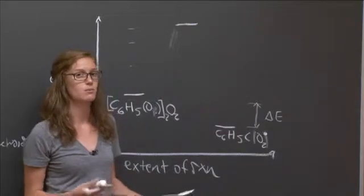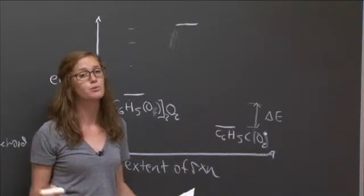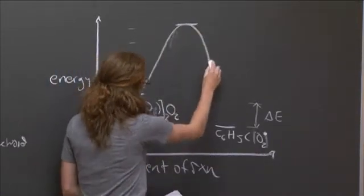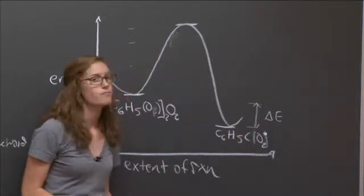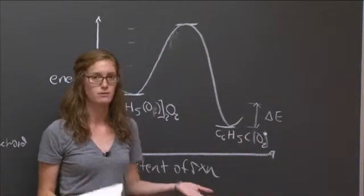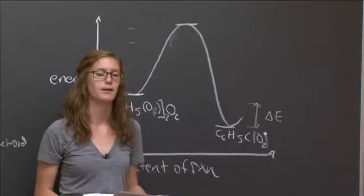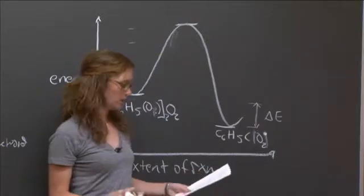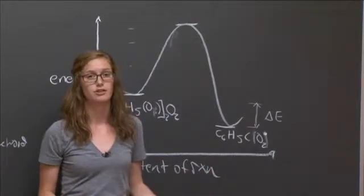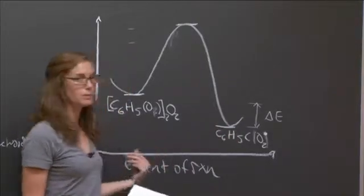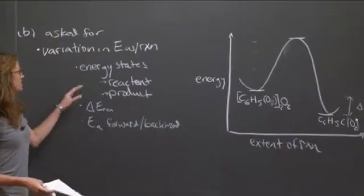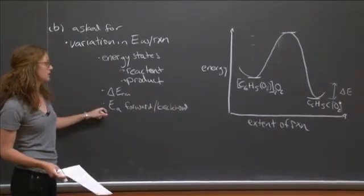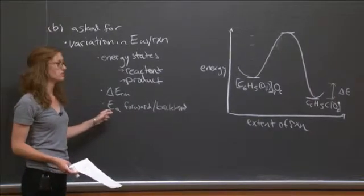So now that we have all of our energy states, we want to draw a smooth curve to show the variation of energy with the reaction. So connecting all of these points, we get two valleys and a hill. We have two stable energy states, and we have an activated complex corresponding to the activation energy there. So we have our energy diagram, but we need to go back to what the question is asking and see that we've labeled the energy states, we've labeled the delta E of reaction, but we need to label both the forward and backwards activation energy. And this is one of the things people had issues with, the backward activation.